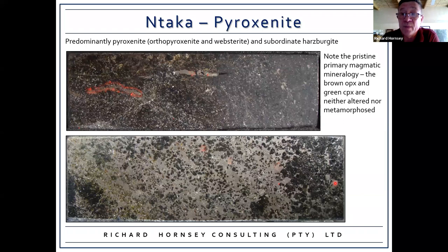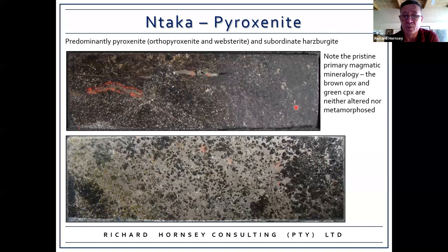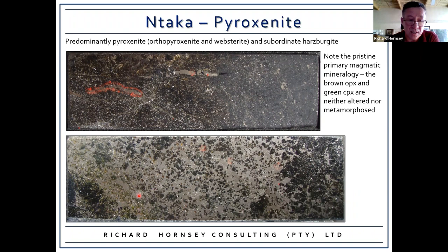The intrusion is predominantly ultramafic — predominantly pyroxenite, some harzburgite, but very little if any intermediate or evolved material. One of the things immediately apparent in the pyroxenite is that the mineralogy is pristine: no alteration, no deformation. You can clearly see the brown orthopyroxenes and the green clinopyroxenes within rocks that are neither altered nor metamorphosed.